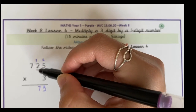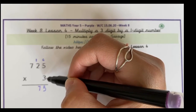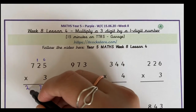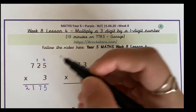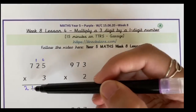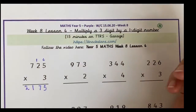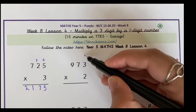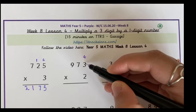And let's look at the hundreds column. 7 times 3 — what's 7 times 3? 7 times 3 is 21. So 725 times 3 is 2,175.